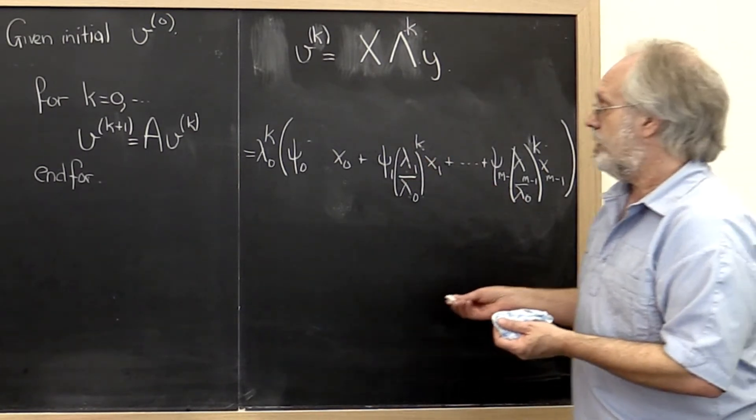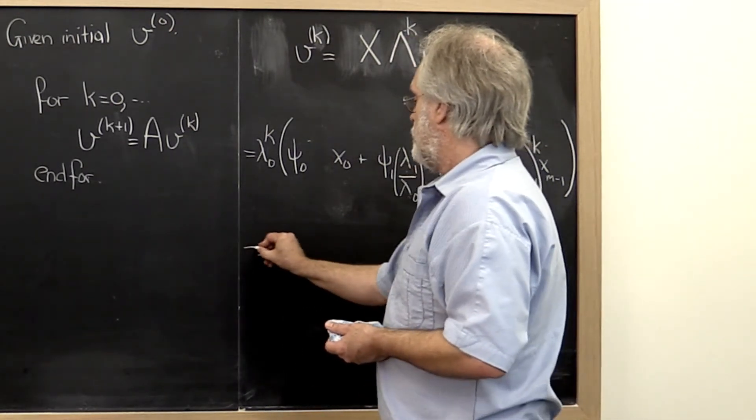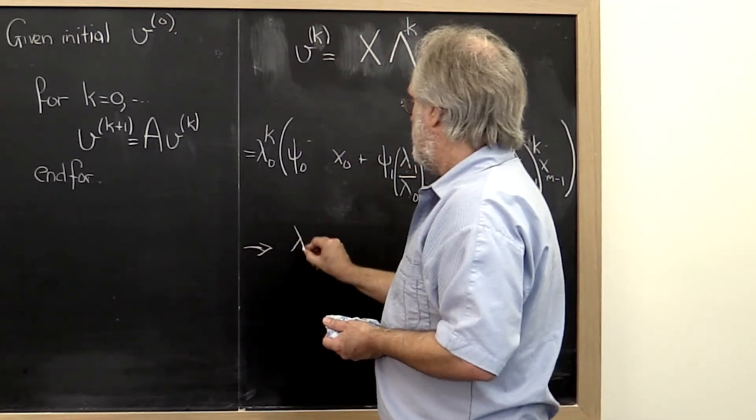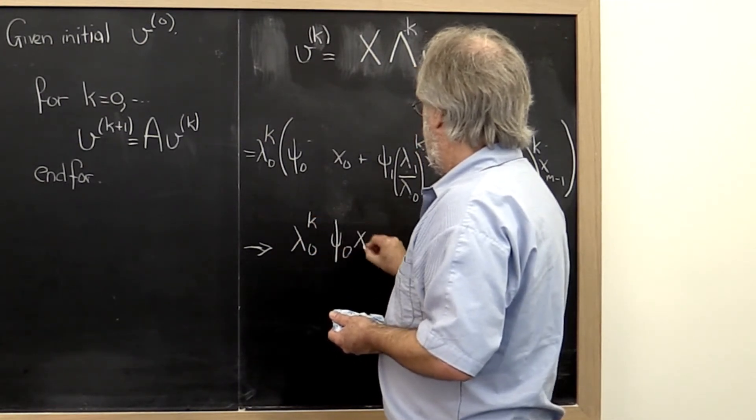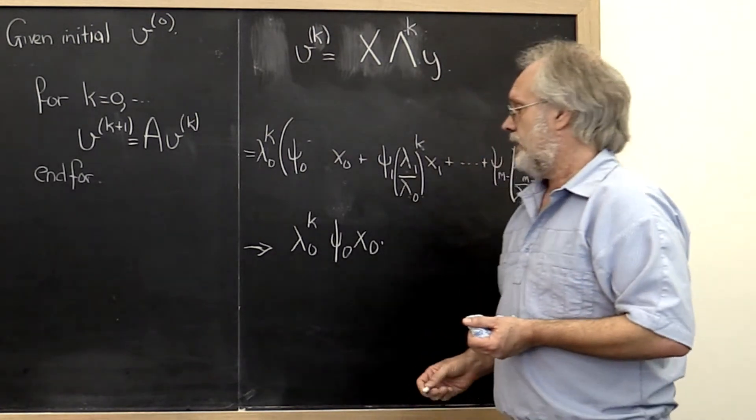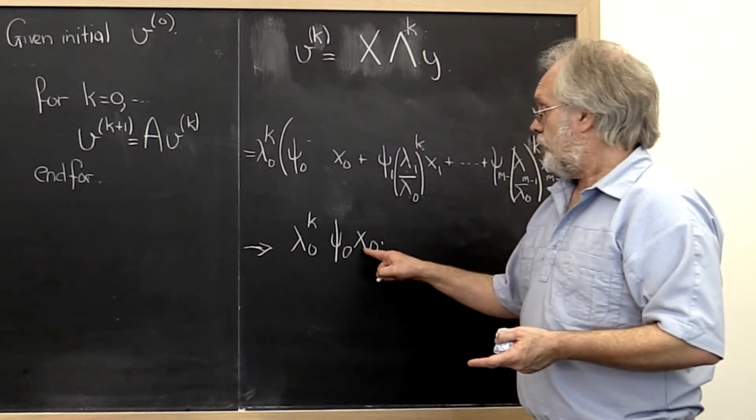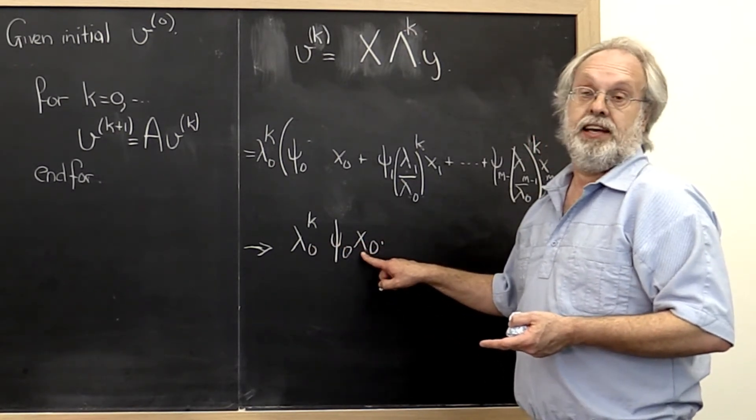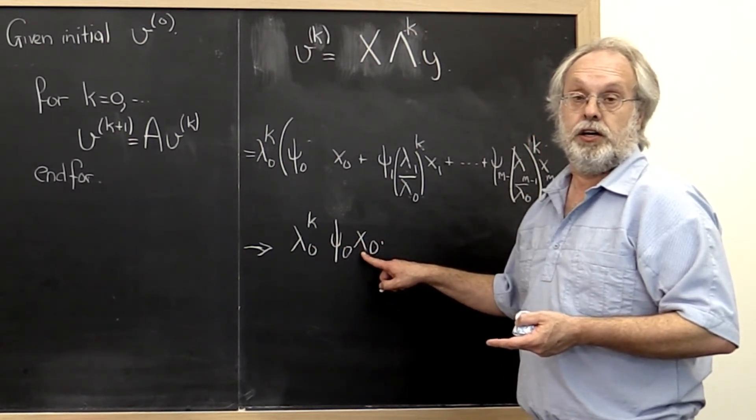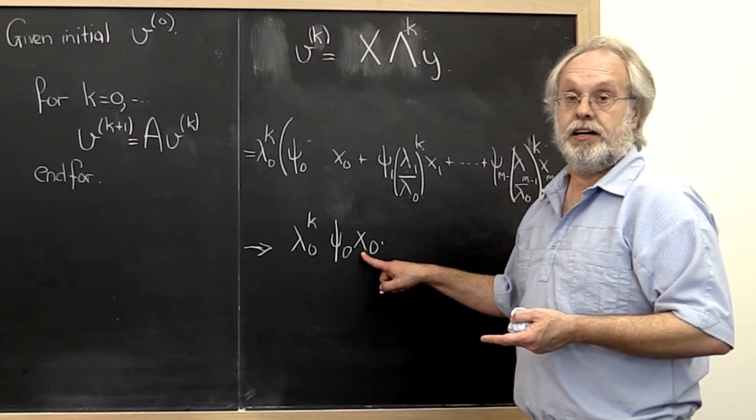And what you're ultimately left with then is that eventually this converges to lambda 0 to the kth power times psi 0 x0. Now we only care about the direction. So notice that therefore eventually its direction ends up being in the direction of the eigenvector associated with the largest eigenvalue.